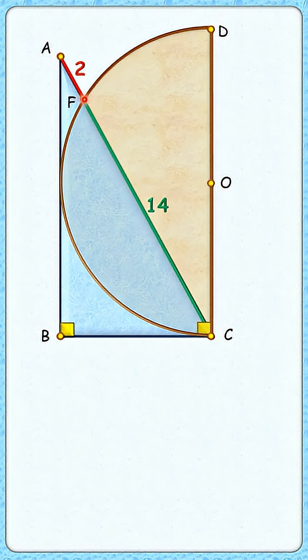Let's start by joining FD here as DC is the diameter so angle F is 90 degrees.